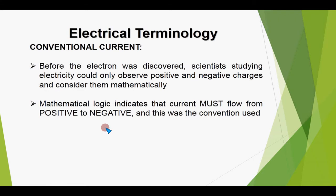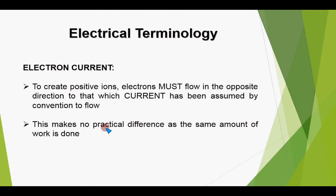Conventional current is an important term in electrical technology. Before the electron was discovered, scientists studying electricity could only observe positive and negative charges, and used mathematical logic concluding that current must flow from positive to negative — this became the convention. After the electron was discovered, the term changed to electron current, which flows from negative to positive. This makes no practical difference, as the same amount of work is done whether current is considered to flow from positive to negative or negative to positive.